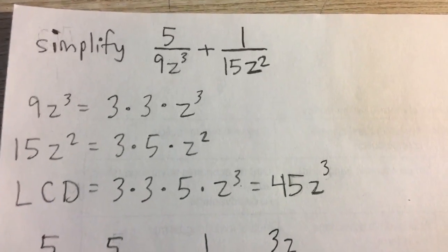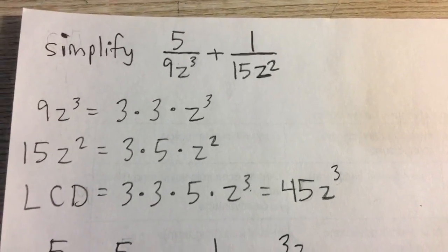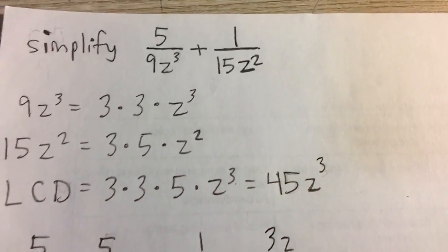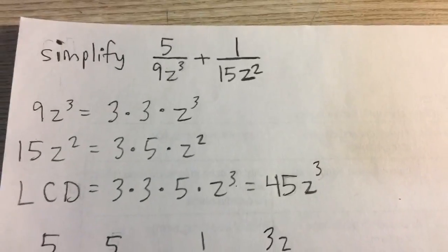Simplify 5 over 9z cubed plus 1 over 15z squared. Here you have to add two fractions, and when we add fractions they have to have the same denominator.